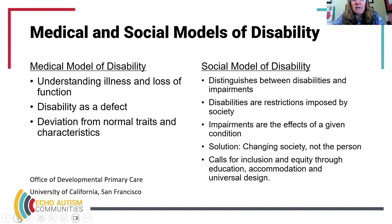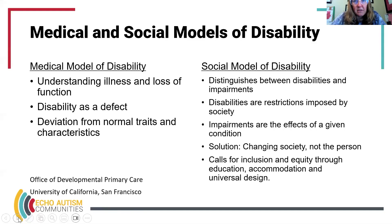Let's think about this. If someone has an ambulatory impairment — meaning they're in a wheelchair and need a ramp — and every building has a ramp, then it's just an impairment, just a difference. But if there are only stairs and no ramp, then their impairment becomes a disability; they are unable to access the building.